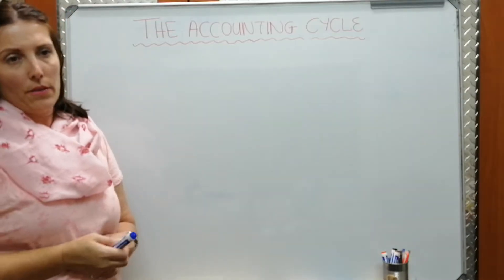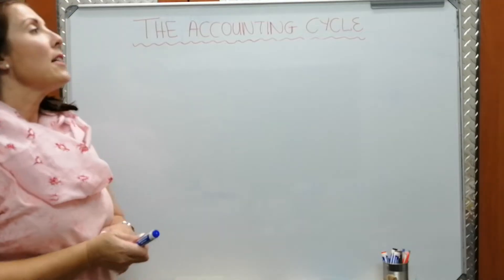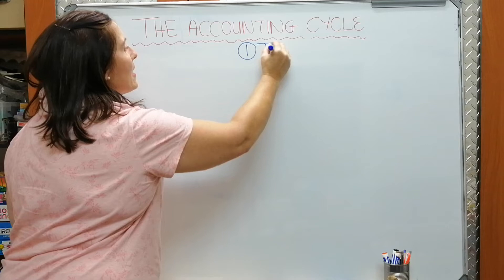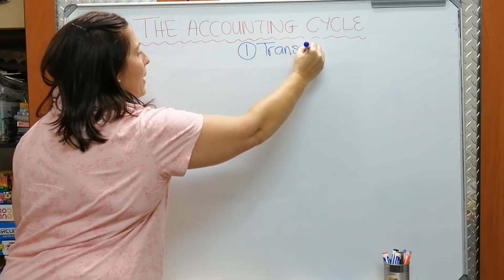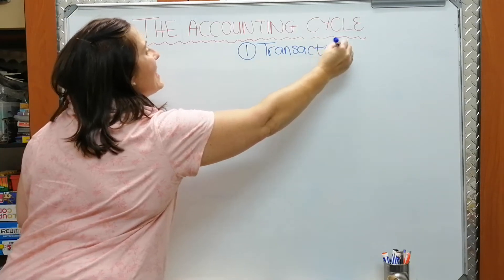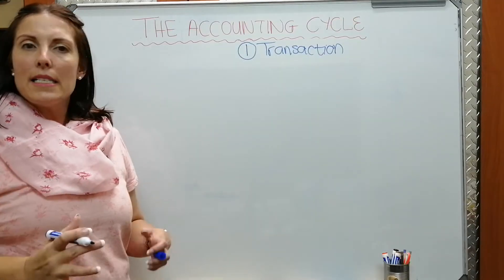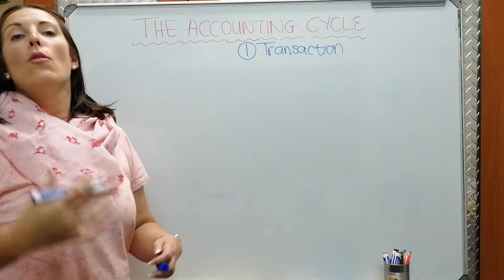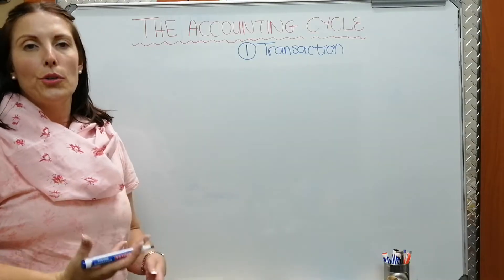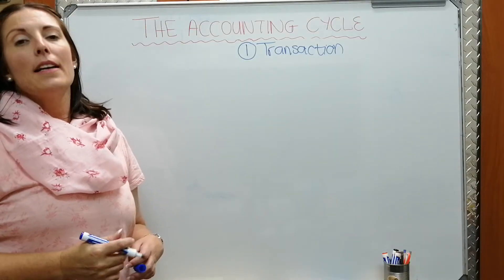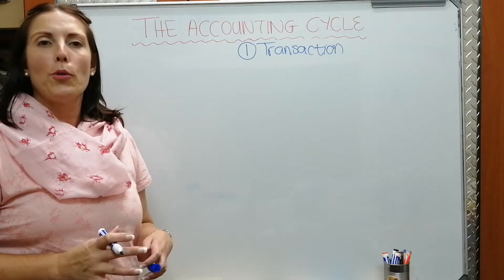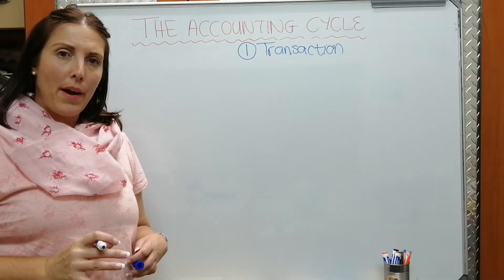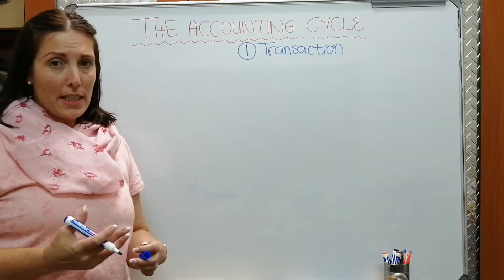The accounting cycle always starts with a transaction. A transaction is basically the exchange of money between two parties for either a service or a good provided. It can be between two businesses — for example, when our business goes to buy stock from a wholesaler or supplier, a transaction takes place because we pay the supplier for the stock.